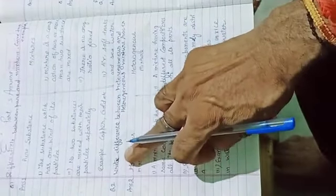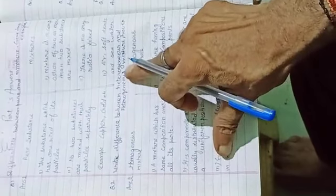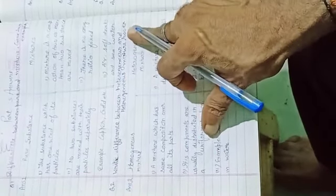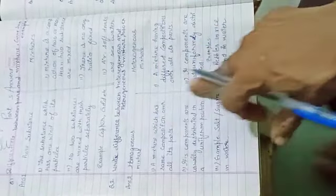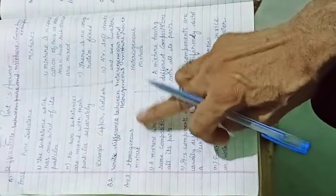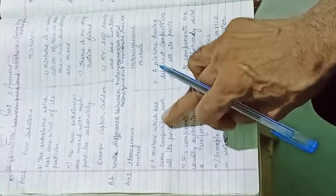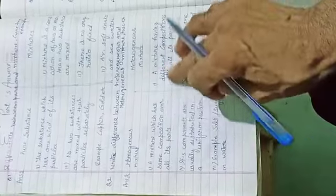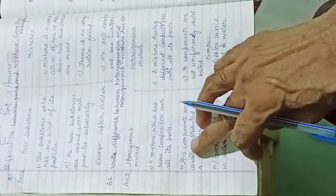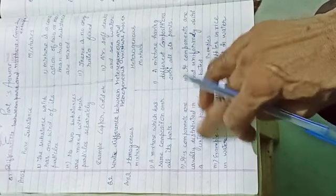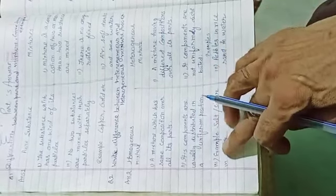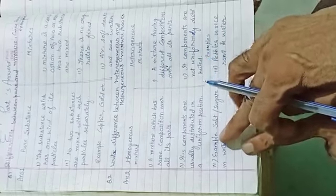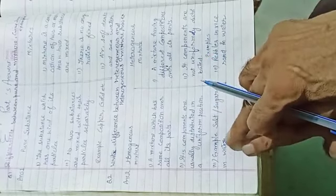Question seven: Write difference between heterogeneous and homogeneous mixture with two examples. Homogeneous mixture: A mixture which has same composition over all its parts. Its components are usually distributed in a uniform position. Examples include salt and sugar in water.